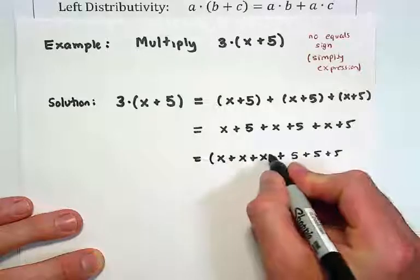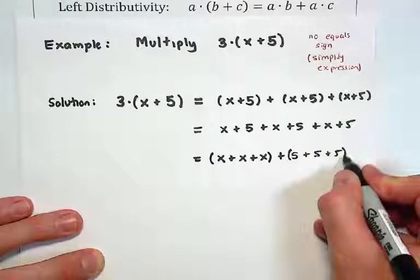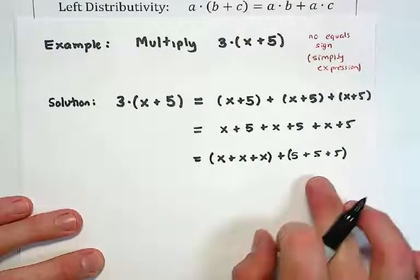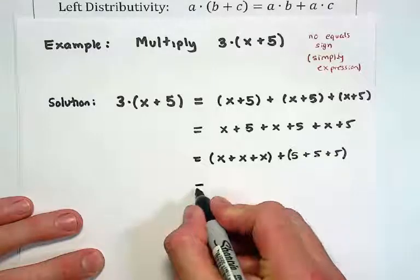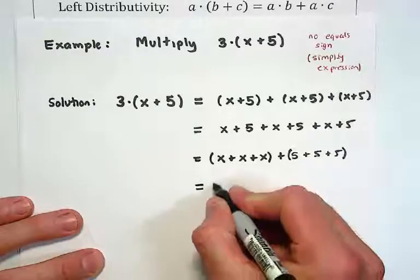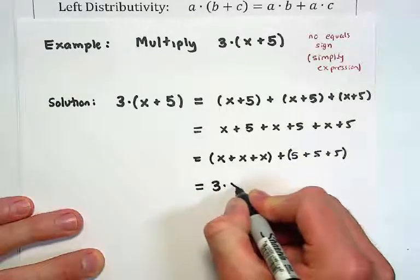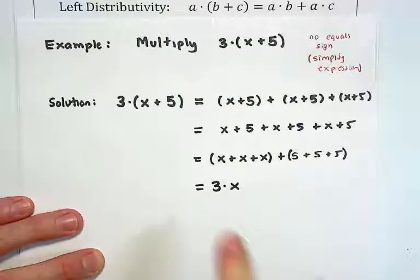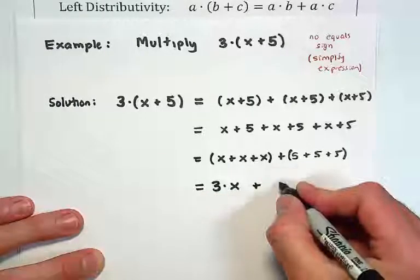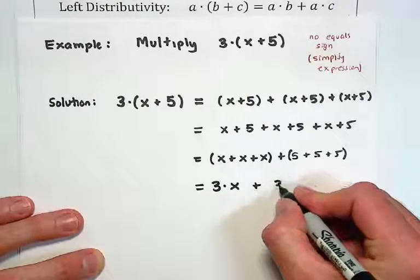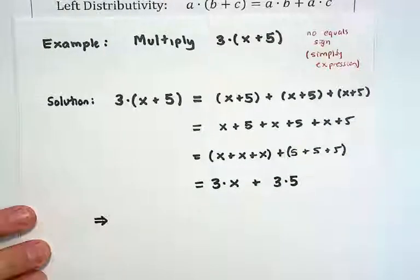We get x plus x plus x, and 5 plus 5 plus 5. We can group the first 3 terms together and the second 3 terms together. Notice the first 3 terms are 3 x's added together — in other words, 3 times x. And the second 3 terms are 3 fives added together — in other words, 3 times 5.